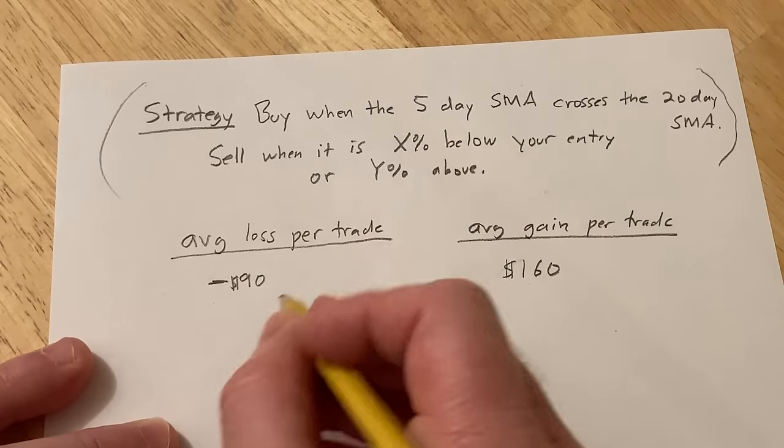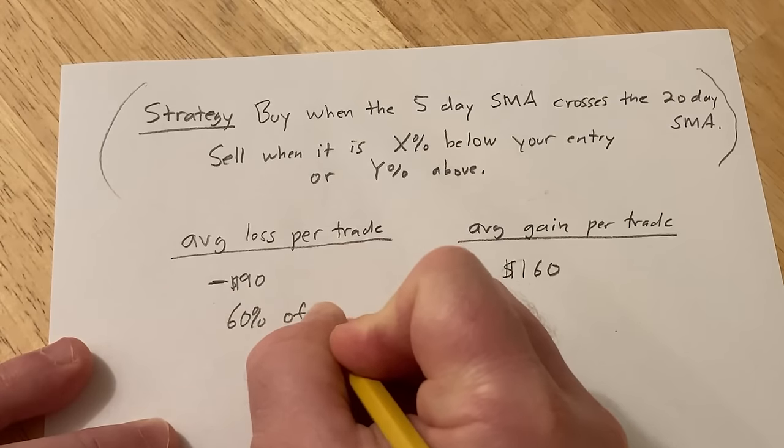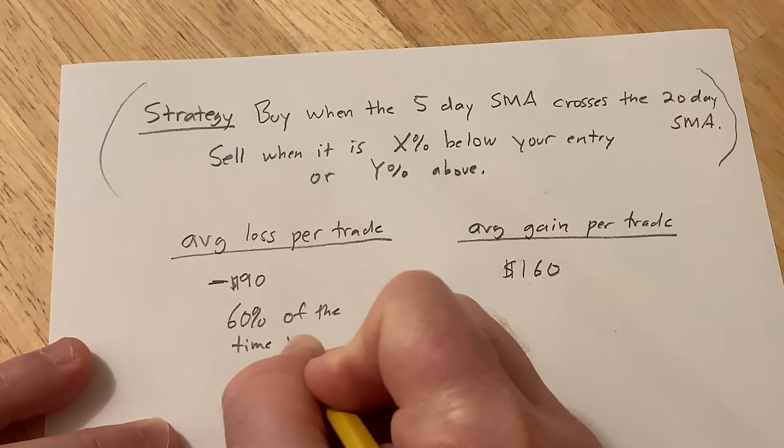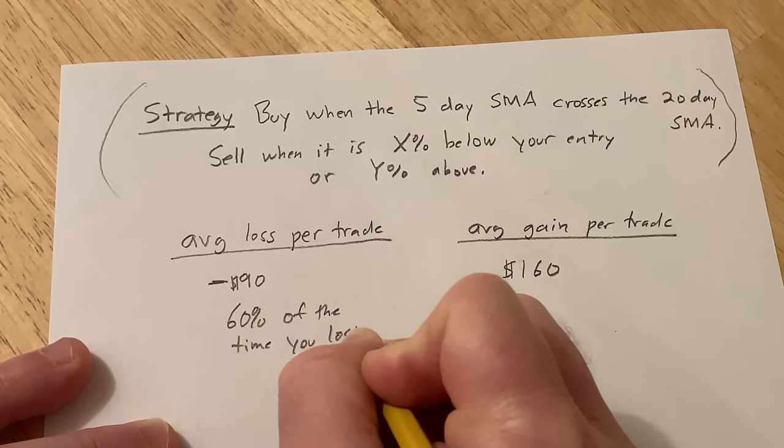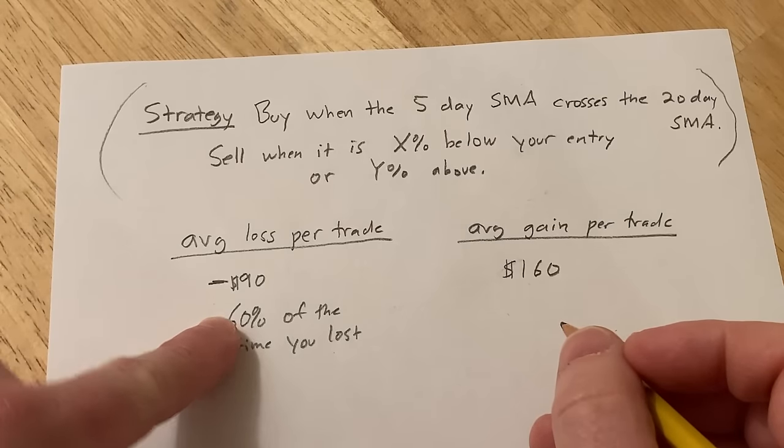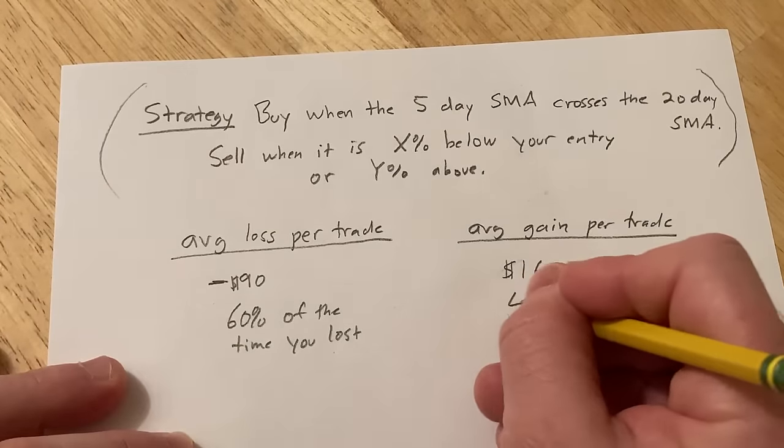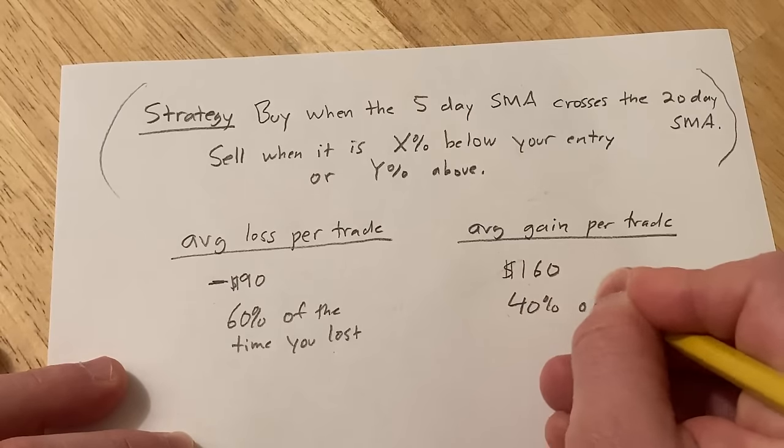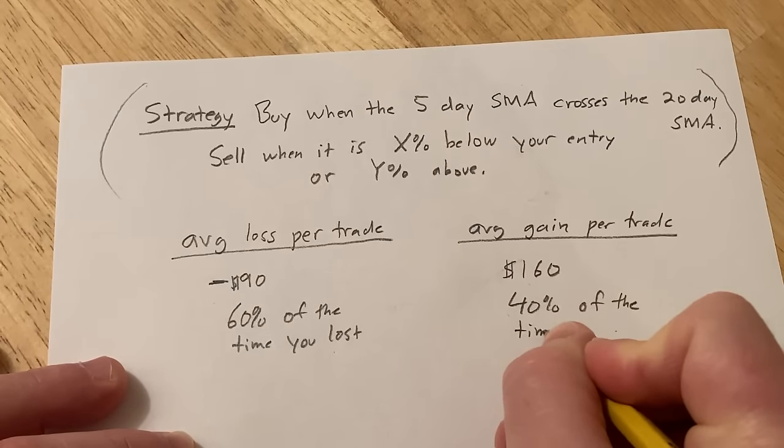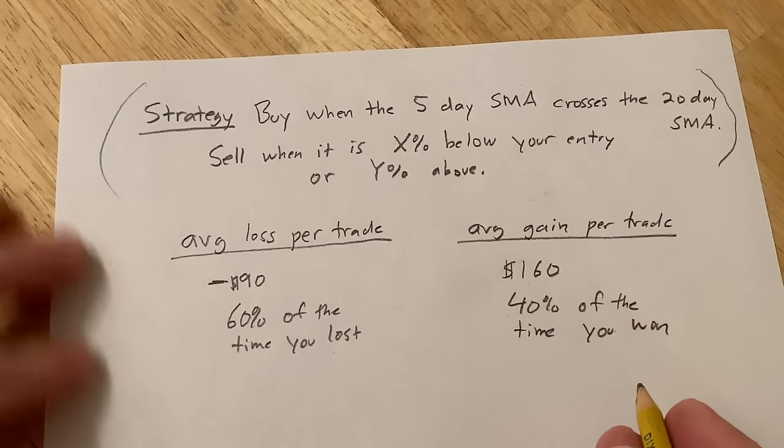And let's also say that 60% of the time, you lost. So you put this through some software and you found out that 60% of the time you were wrong. So you were wrong most of the time. And then 40% of the time, you won. So what does this tell you?